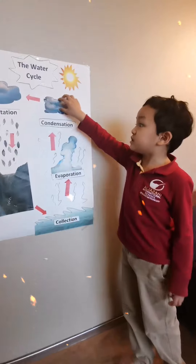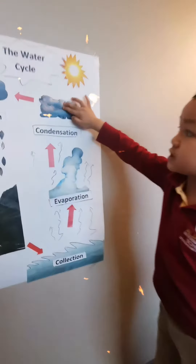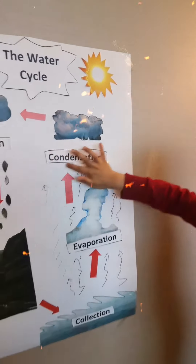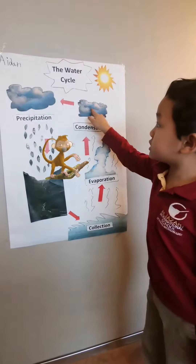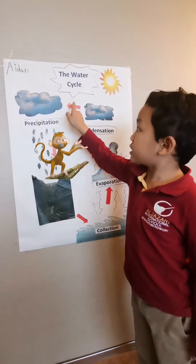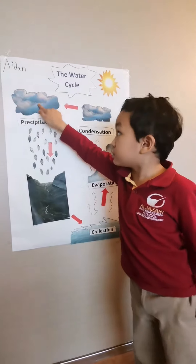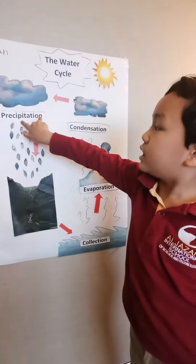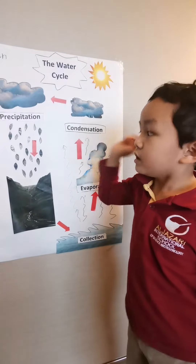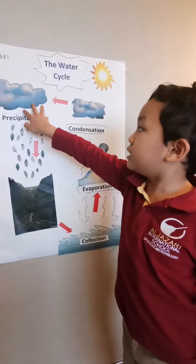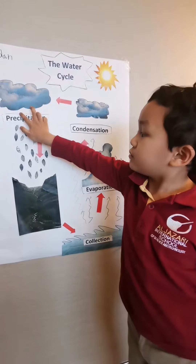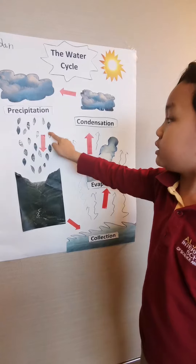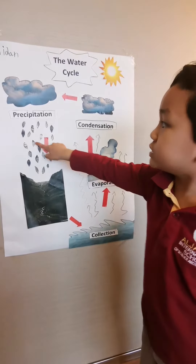when it mixes up with dust, it becomes a cloud, which is called condensation. And when it gets too heavy and can't hold that much water, it bursts down and makes out rain, hail, or snow. That's known as precipitation.